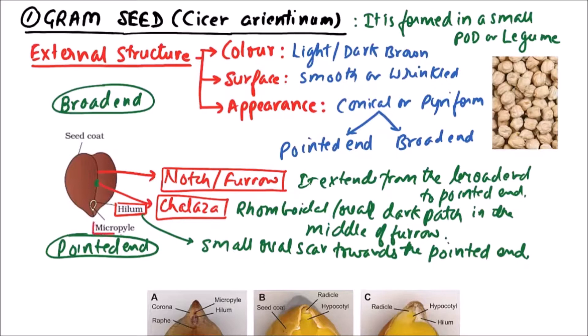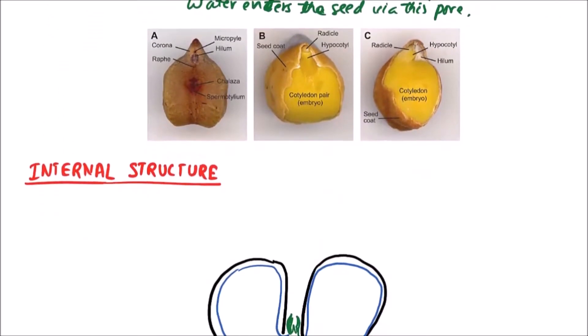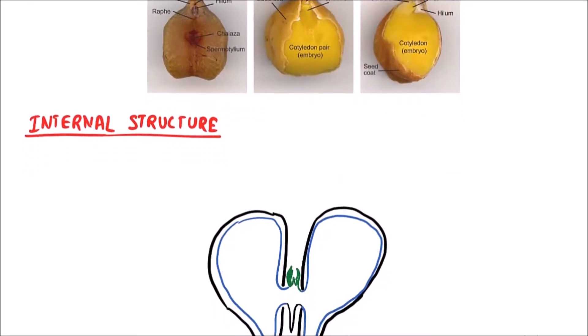Next one is micropyle. Micropyle is the place from where water enters the seed via this pore. So this is the external structure of gram seed. Now we'll discuss the internal structure of gram seed.